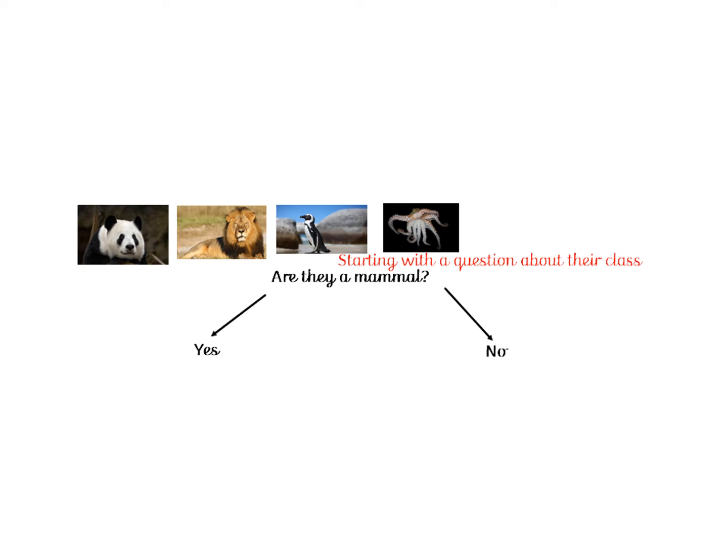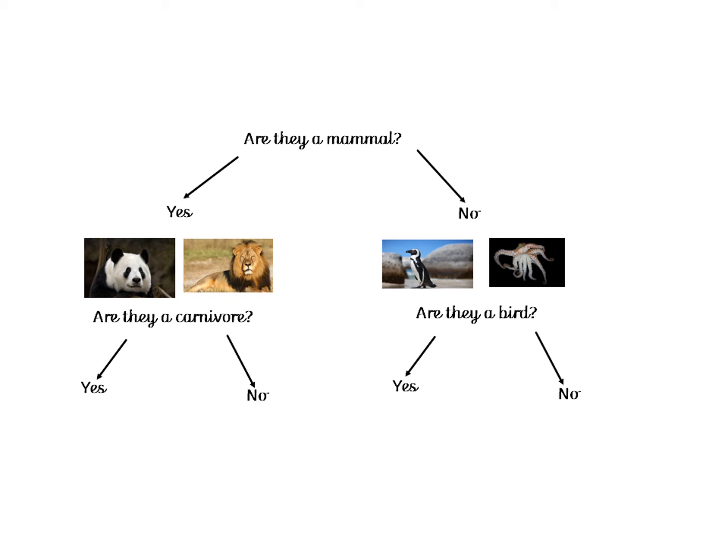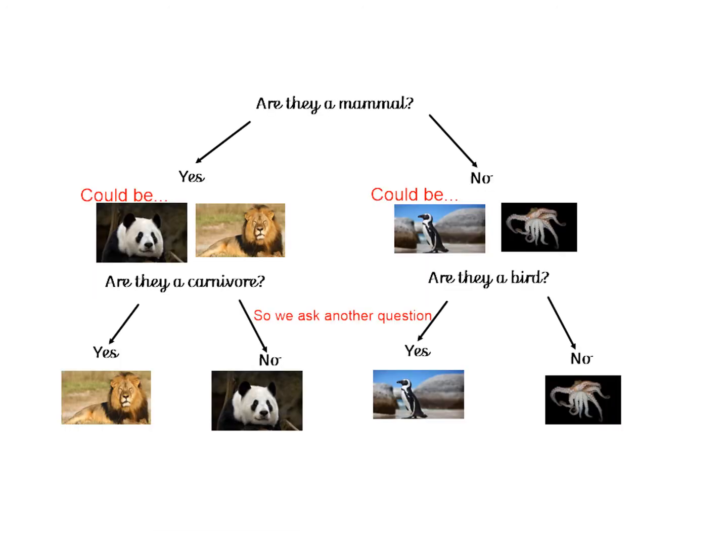Are they mammals — yes or no? The panda and the lion will both go into yes, and the penguin and the octopus will both go into no. So I'm going to need another question to make it more specific. I need a question to separate the panda and the lion, and a question to separate the penguin and the octopus. I'll ask: are they a carnivore? The lion will be yes, and the panda will be no. On the other side, I'll ask: are they a bird? The penguin will be yes and the octopus will be no. You can see here what it will look like — we don't need to put the pictures after the first question, we can save those until the end.